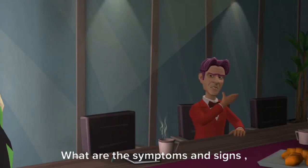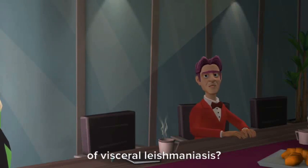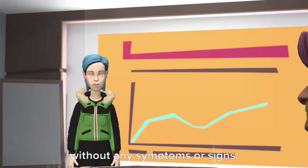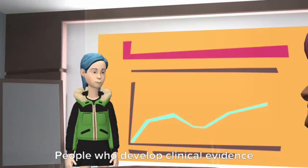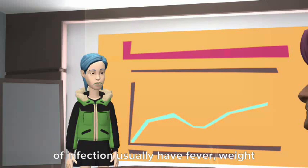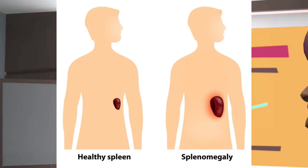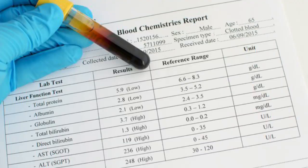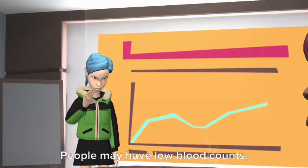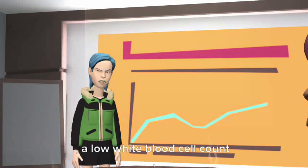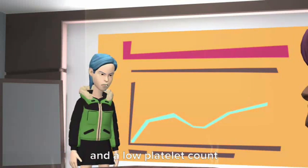What are the symptoms and signs of Visceral Leishmaniasis? Some people have a silent infection without any symptoms or signs. People who develop clinical evidence of infection usually have fever, weight loss, enlargement of the spleen and liver, and abnormal blood tests. People may have low blood counts, including a low red blood cell count, a low white blood cell count, and a low platelet count.